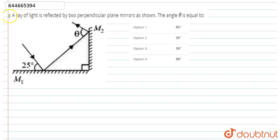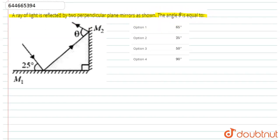In this question, it is given that a ray of light is reflected by two perpendicular plane mirrors as shown. The angle theta is what we have to find.